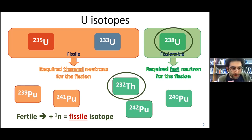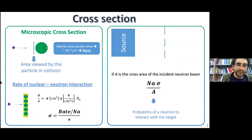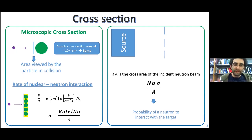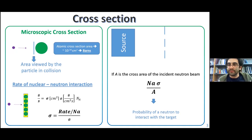Before going to the fission reaction, let's talk very briefly about what the cross section is. The microscopic cross section is the area that a particle during the collision can see of the target nuclei. For example, in this image we have the neutron in collision with the target nuclei, for example uranium-235. This area is around 10 to the minus 24 centimeters squared, which is one barn essentially.